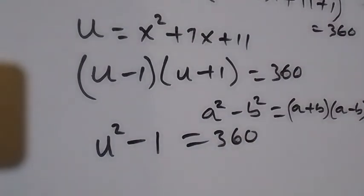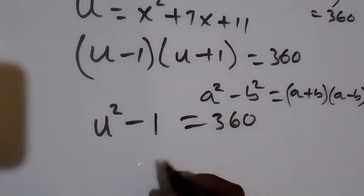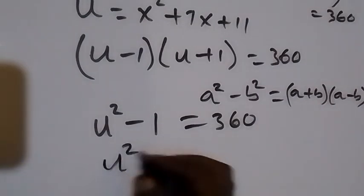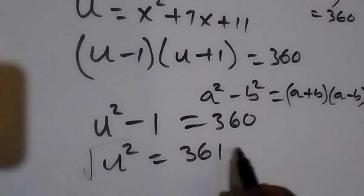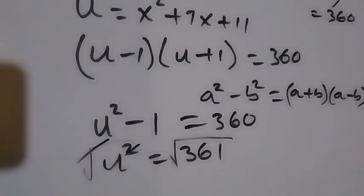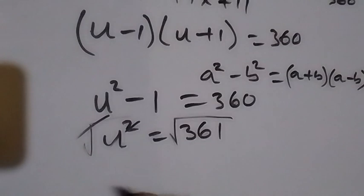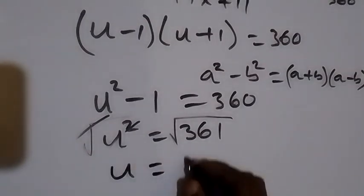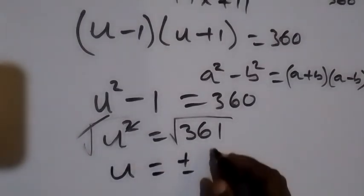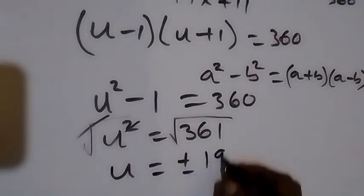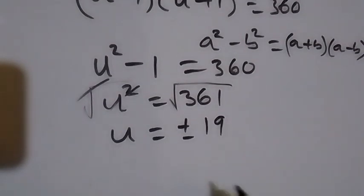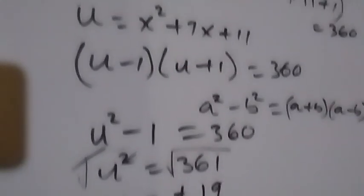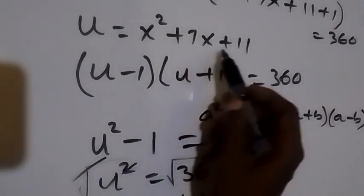Solving for u, we take −1 to the other side to get plus, so u² = 361. Introducing square roots on both sides, the square cancels, giving u = ±√361 = ±19.